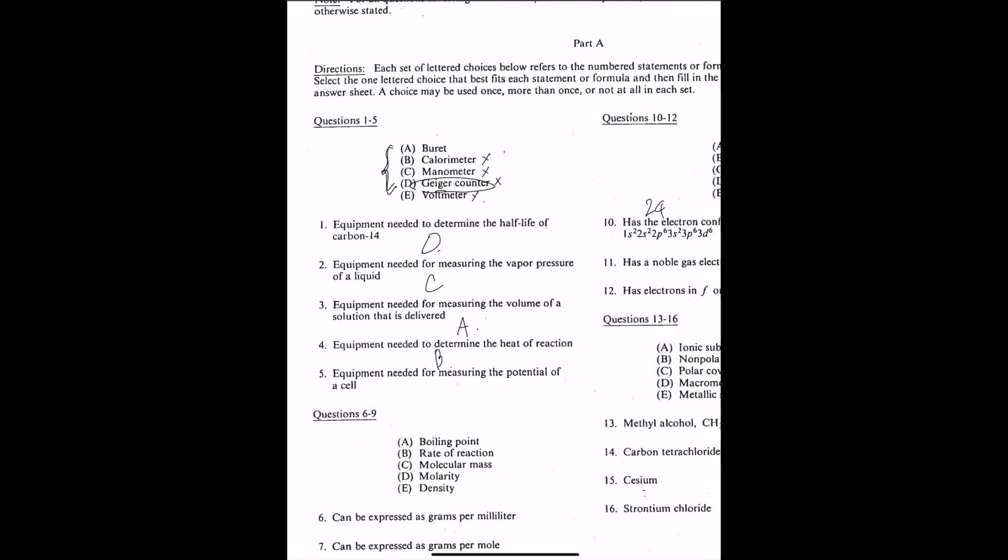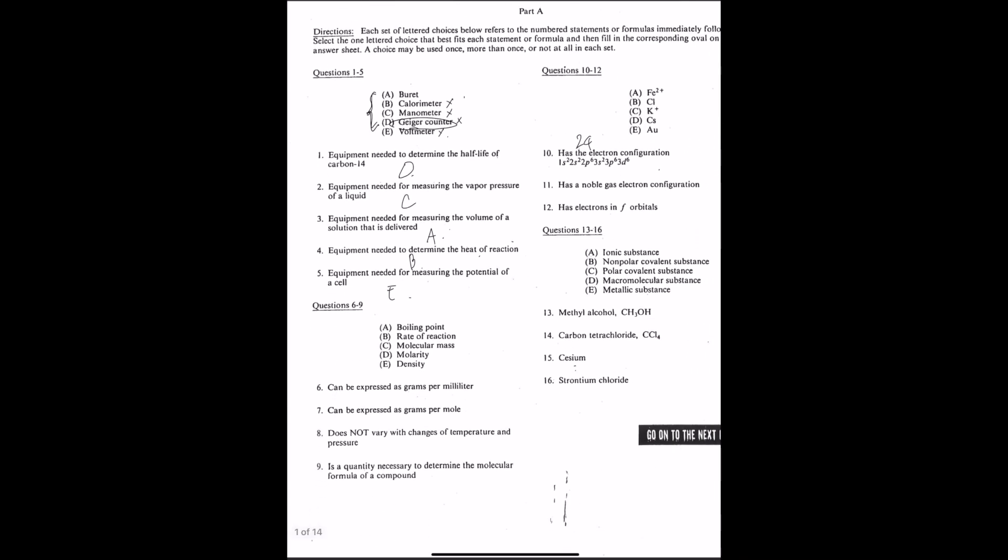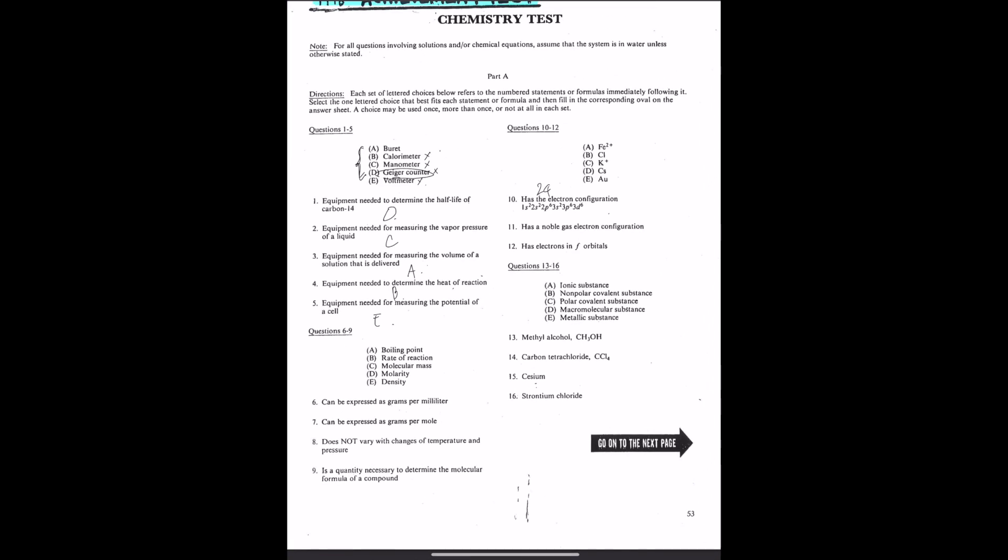Number five, equipment needed for measuring the potential of a cell. That's a voltmeter. So in a galvanic cell, there's a salt bridge there, and the anode and the cathode, and the voltmeter will be here to measure the flow of electrons. However, questions related to electrochemistry will not be covered in the more recent exams. As some of you may have noticed that in your most recent SAT chemistry textbooks, electrochemistry is not mentioned.